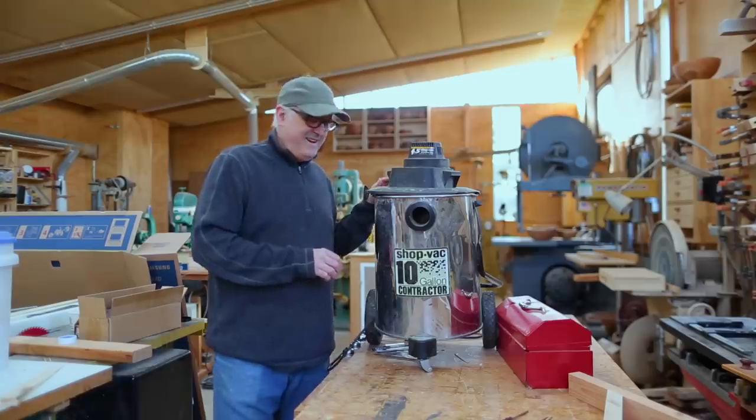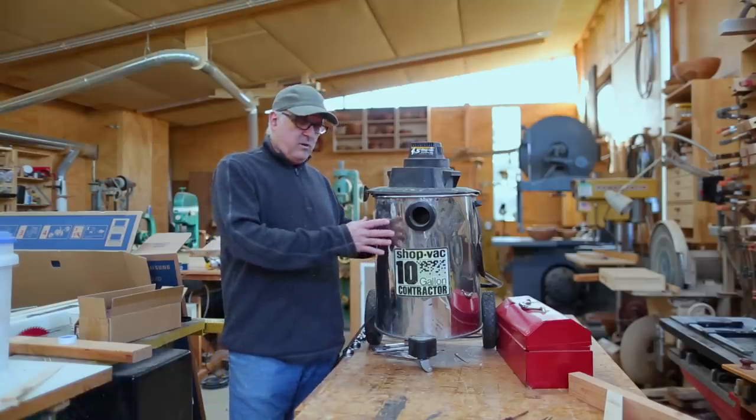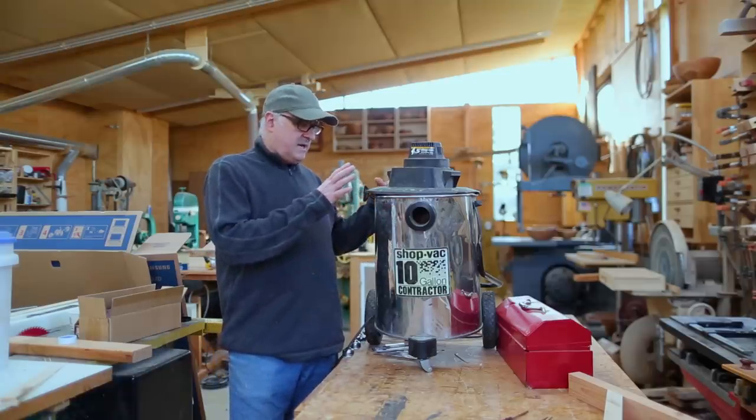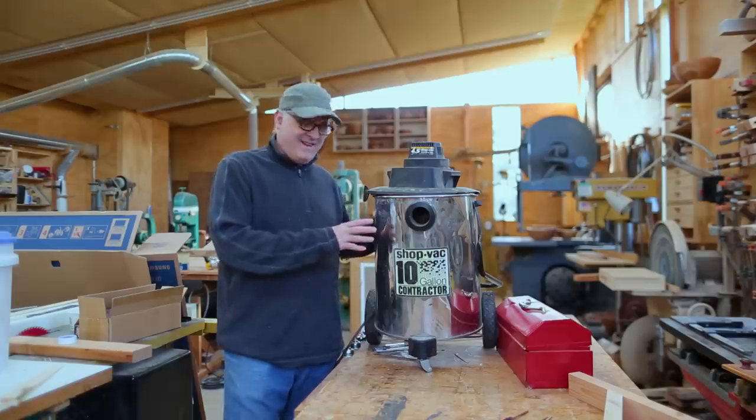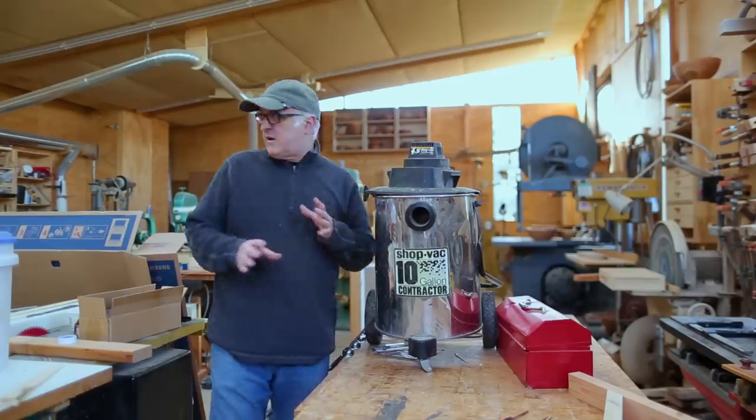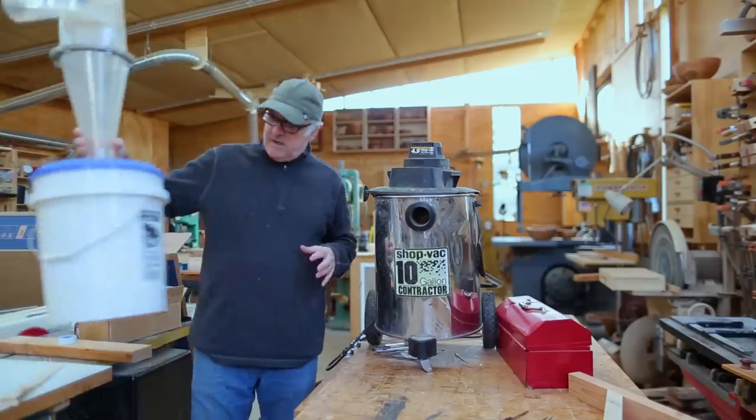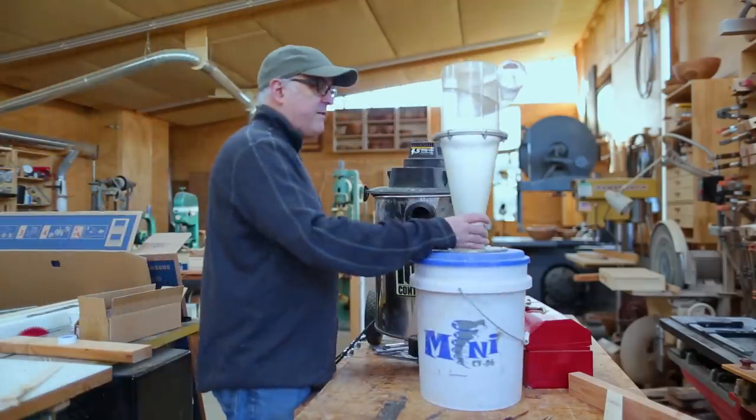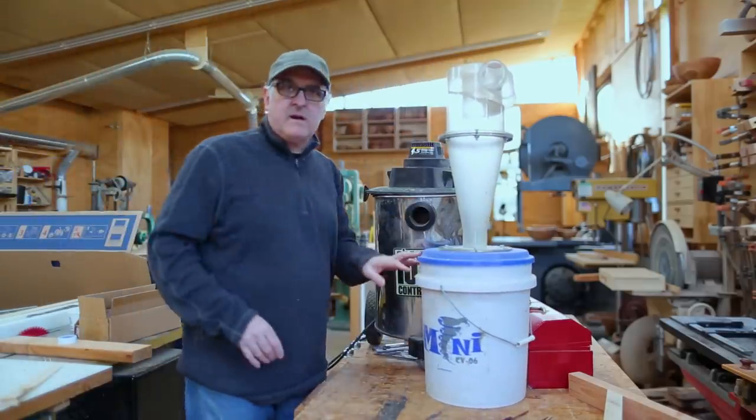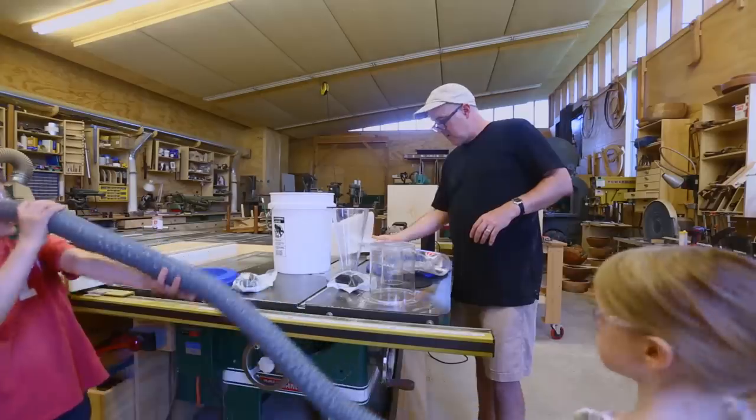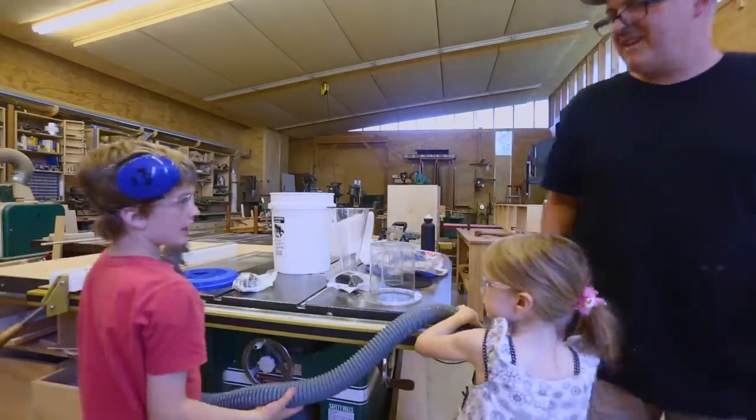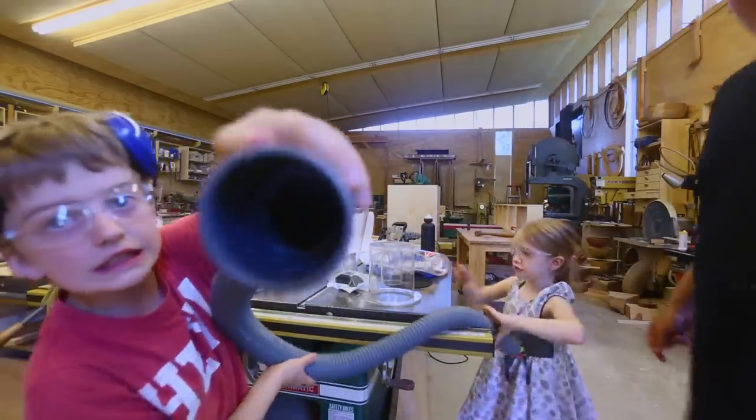Hi, so this is my old shop vacuum and it sucks pretty well. And then a few years ago I got a clear view separator for it. Okay, this telescope does not work. Can you see anything?